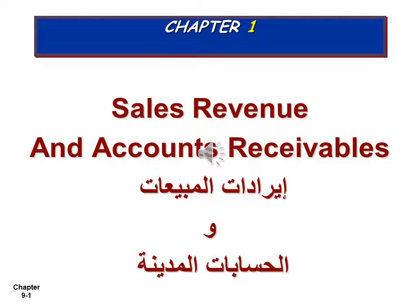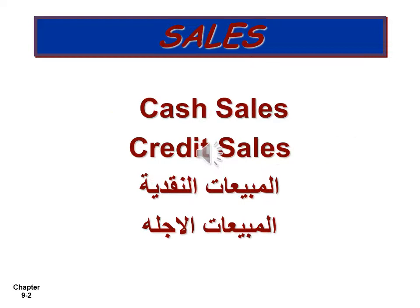Chapter 1: Sales Revenue and Accounts Receivable. Sales can be divided into two categories: cash sales and credit sales, or sales on account.